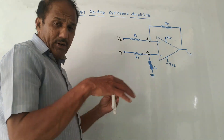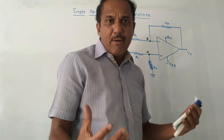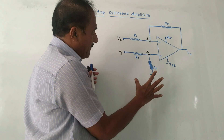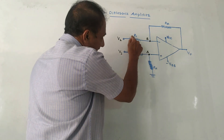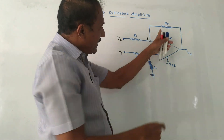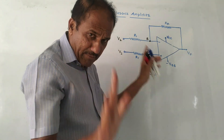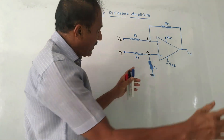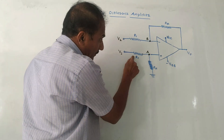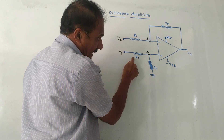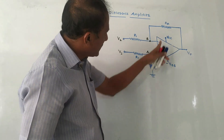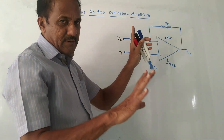One more thing you need to remember while studying this difference amplifier: this resistance is R1 and this is Rf — we know that Rf is the feedback resistance. The same resistance values are used at the positive terminal as well: this is also R1, meaning both R1 resistances are the same, and this resistance is Rf, which is the same as the feedback resistance.